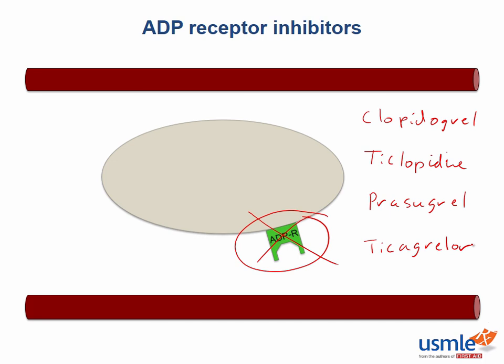So when these medications block the ADP receptor, what does this actually do? Well, by blocking the ADP receptor, glycoprotein 2b3a is never expressed, and therefore platelets can't crosslink with fibrinogen and other platelets to form the platelet plug.